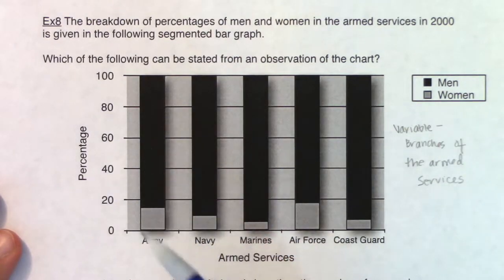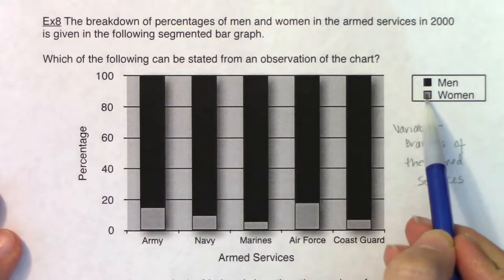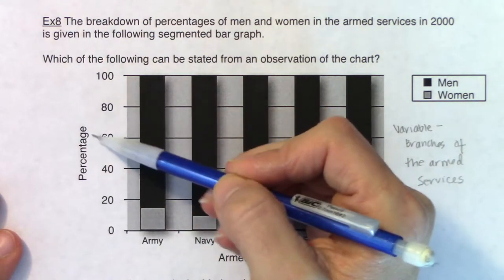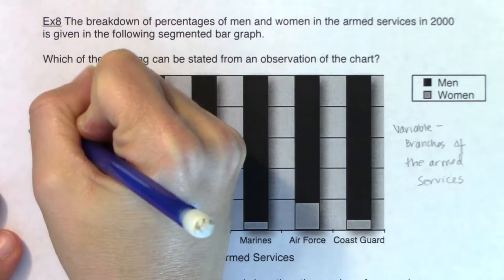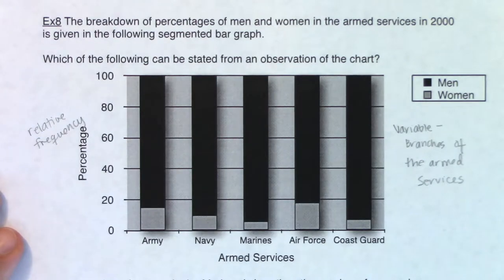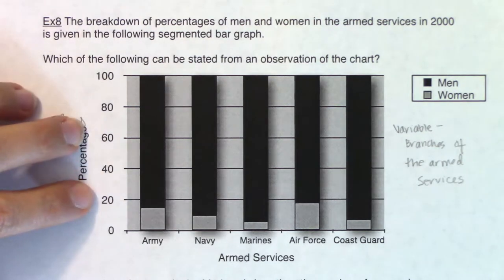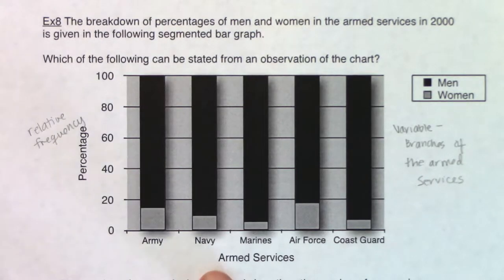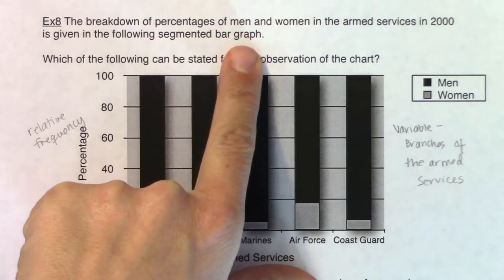If we look at any one of these bars, they are broken up — you see the darker color and the lighter color — and the key shows men and women. On the y-axis, take note that these are percentages, so this is a relative frequency on the y-axis. Anytime you see a percentage, that's a relative frequency. Since our variable is categorical, we call this a bar chart or bar graph rather than a histogram.